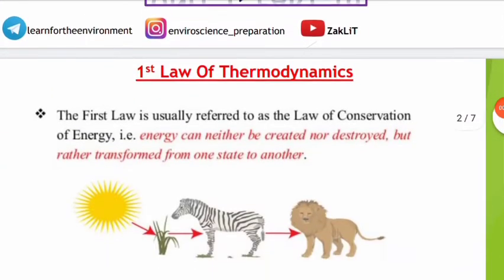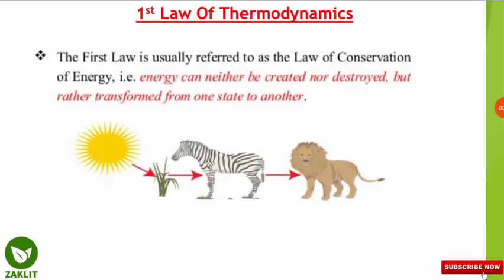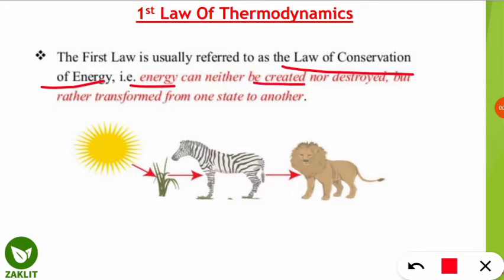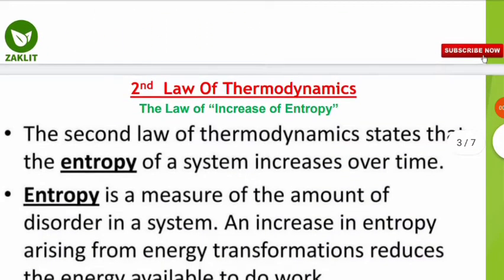We should recall the first law of thermodynamics, which you studied in the previous lesson. In our environment, this law is known as the law of conservation of energy — energy can neither be created nor destroyed, but rather transformed from one state to another. For example, from heat energy to chemical energy to food energy, passing from one trophic level to another.